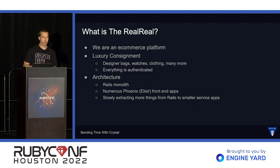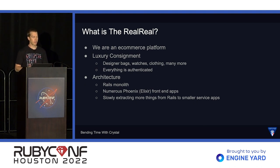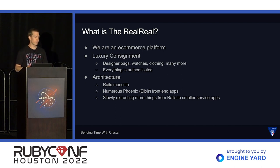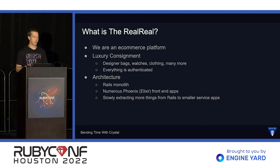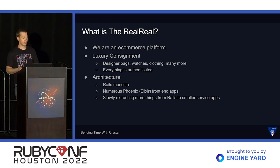We are an e-commerce platform. We do luxury consignment — we sell designer bags, designer watches, clothing, and many more categories. Most of our products come from other consumers who are reselling their items, while a small amount comes from retailers and designers directly. Our architecture consists of a Rails monolith and numerous Phoenix front-end apps which consume data from that Rails app. We are slowly working to extract services from the Rails app, which gives us the freedom to look at other technologies when we need a creative solution to something.